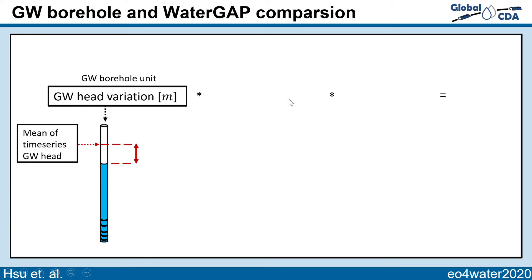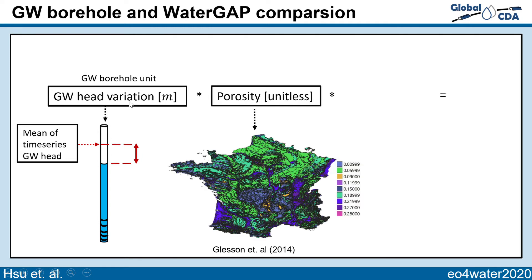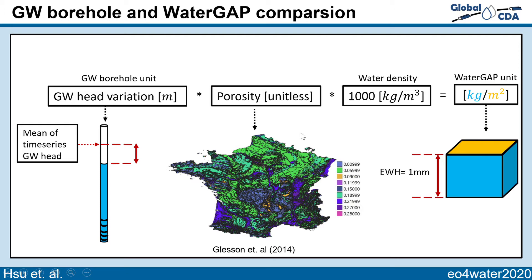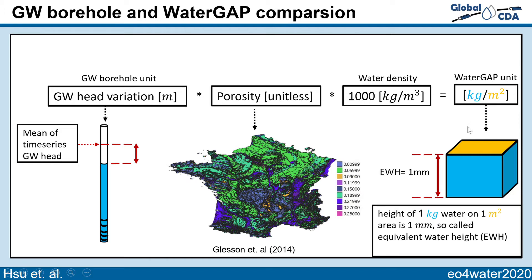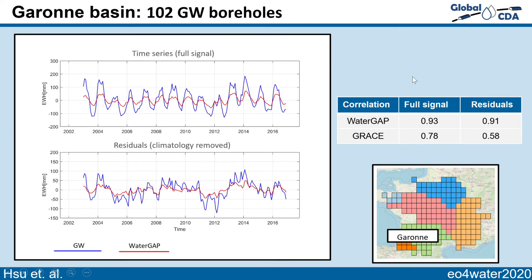To make the groundwater borehole data and WaterGAP comparable, we take the head variation from the groundwater borehole, multiply by the porosity from Gleeson et al. 2014, and multiply by water density to obtain the WaterGAP unit. This unit means one kilogram of water over one square meter area equals one millimeter, and this is called equivalent water height.